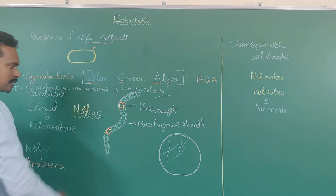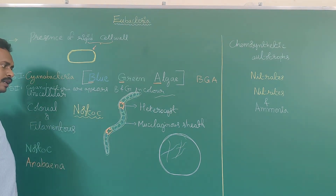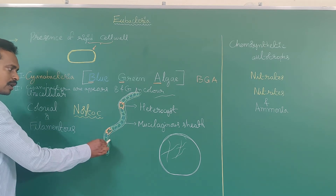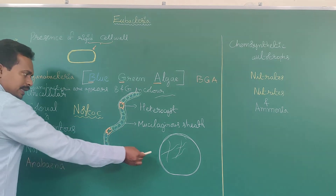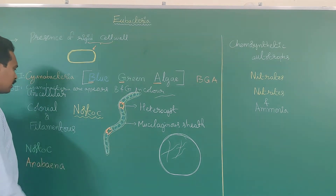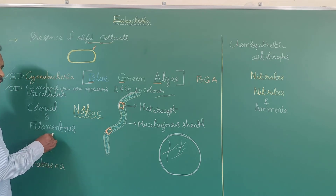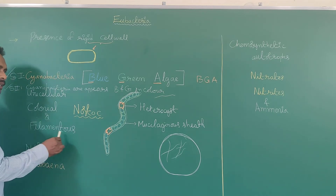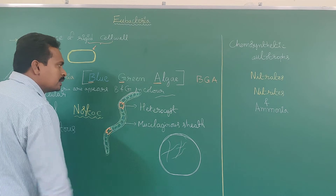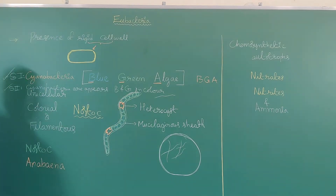For example, Nostoc — several Nostoc filaments, where individual organisms are aggregated to form a colony. Filamentous forms, in the sense, they appear like a plant-like appearance.